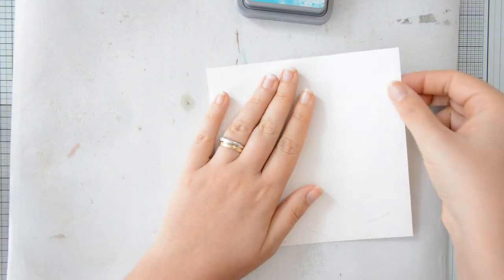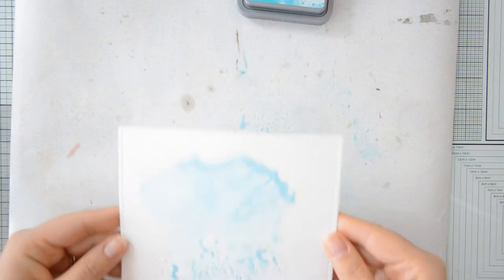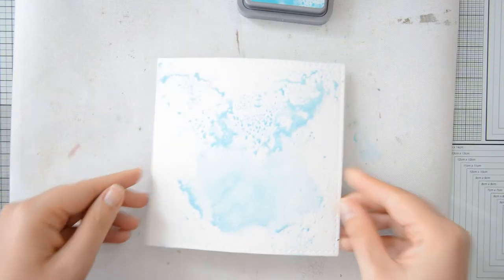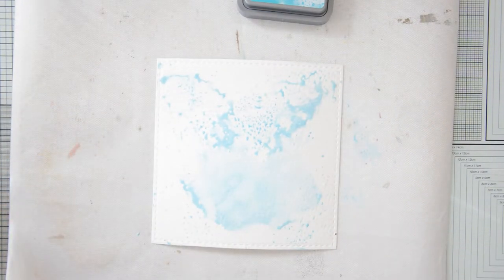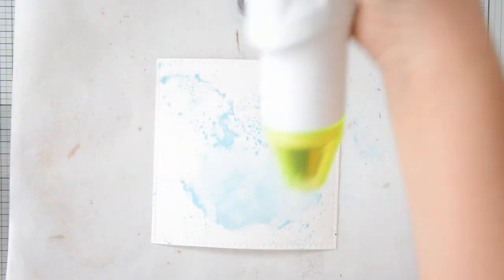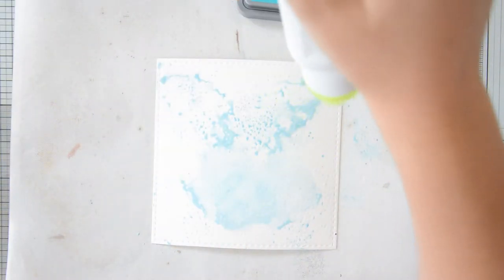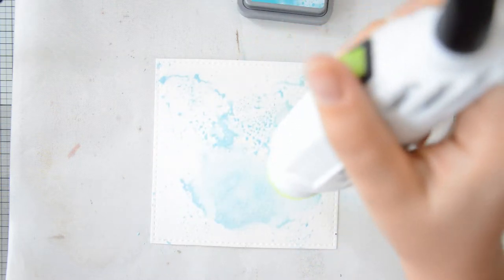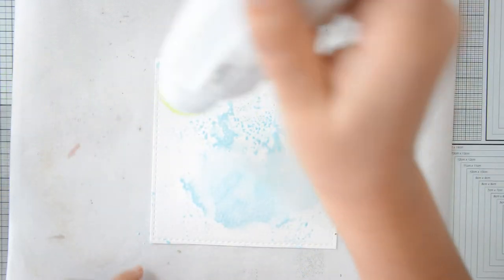I went ahead and off camera I die cut all the elements from some Winsor & Newton Cotman watercolor cardstock. And I am starting with the large square die cut and I'm adding color to it using distress oxides and the ink smooshing technique. So I pressed my Tumbled Glass ink pad on my EasyClean mat, I activated it with water and then you saw me flip the paper upside down and sort of dip it in the ink. And now I am drying this first layer of ink using my heat gun before moving on and adding more color and more layers.